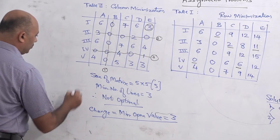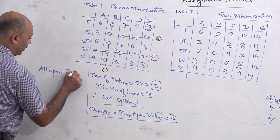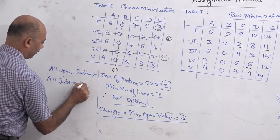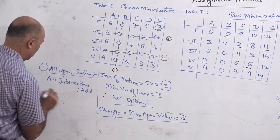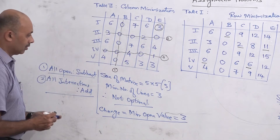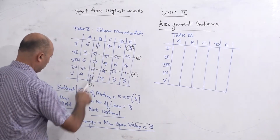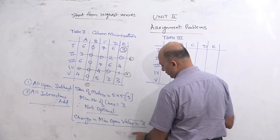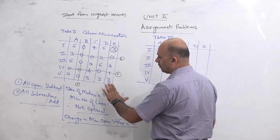The rule of change is: for all open values, subtract the change value (3); for all intersections (where two lines cross), add the change value (3); and all other values remain the same. We will now write Table 3 and apply these changes.